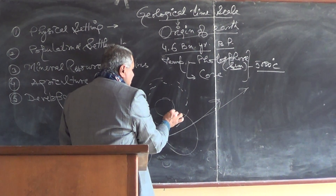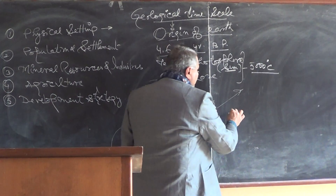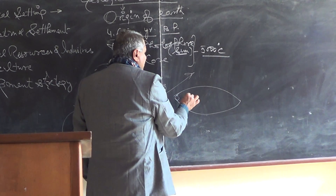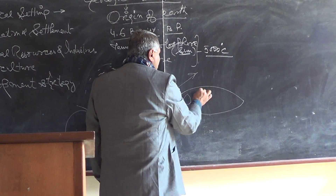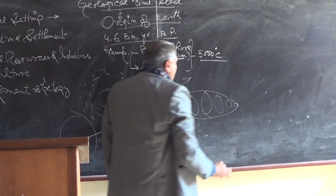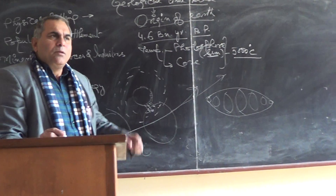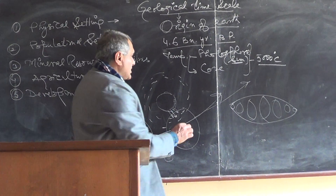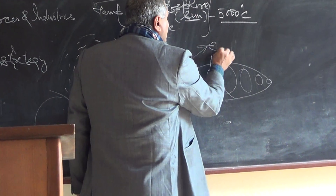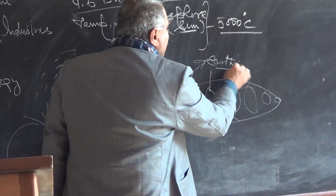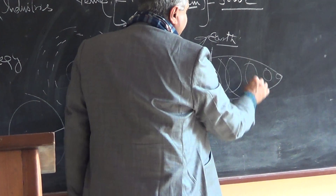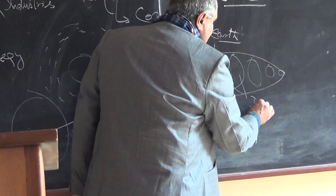Ultimately, this segregated mass developed distinct features — smaller planets, bigger planets, and even larger ones. So 8 to 9 planets formed according to size. Earth is one of them. The biggest planet, out of all nine, is Jupiter.